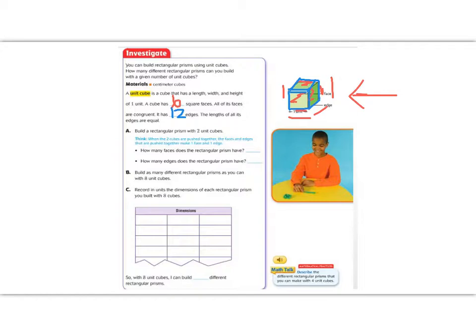In order to build a rectangular prism, we would need to take more than one unit cube and put it together. So it says build a rectangular prism with two unit cubes. Well, if I have two unit cubes together, then I would have the same amount of faces. Here's my unit cube, and here's one right next to it. So I have these two that are next to each other, but all of this is still one face. So I have 6 faces, but I still have 12 edges.